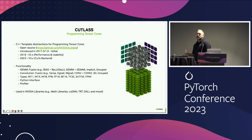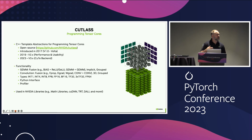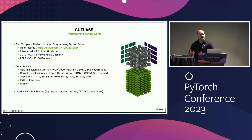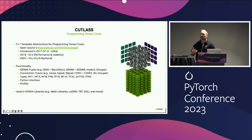Cutlass is our header-only open-source library for programming tensor cores on GitHub. It was initially released in 2017 as a way to improve the programmability of the Volta tensor core, and since then adoption has grown pretty significantly. It's transitioned from a research tool for DL practitioners to more of a production asset that you'll find throughout the ecosystem.